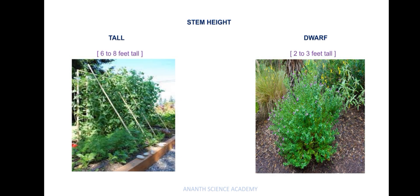The other character is height of the stem. The two contrasting traits are tall plants and dwarf plants. Tall plants usually grow up to 6 to 7 feet tall, while dwarf plants grow only up to 2 to 3 feet tall.